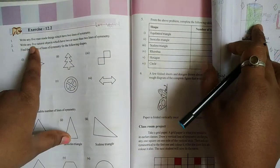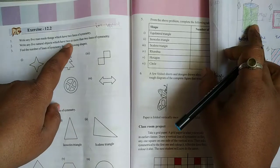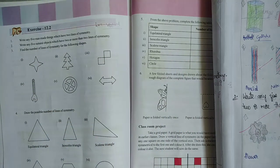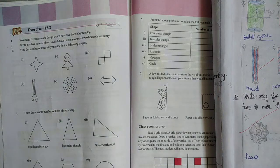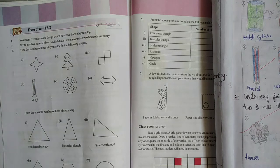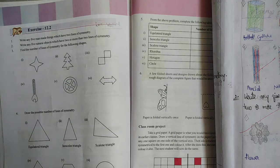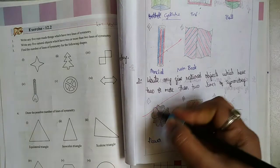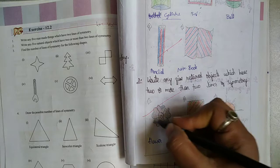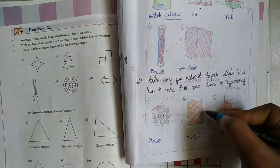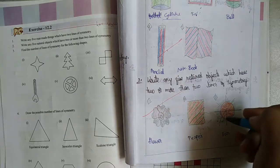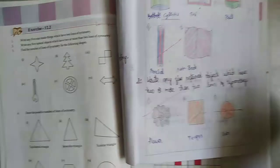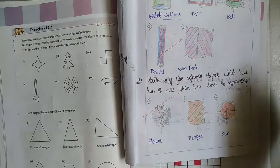Next, second one: write any 5 natural objects which have 2 or more than 2 lines of symmetry. Here we will see 2 or more line symmetries. At the same time, paper also. Paper has horizontal and vertical symmetry.